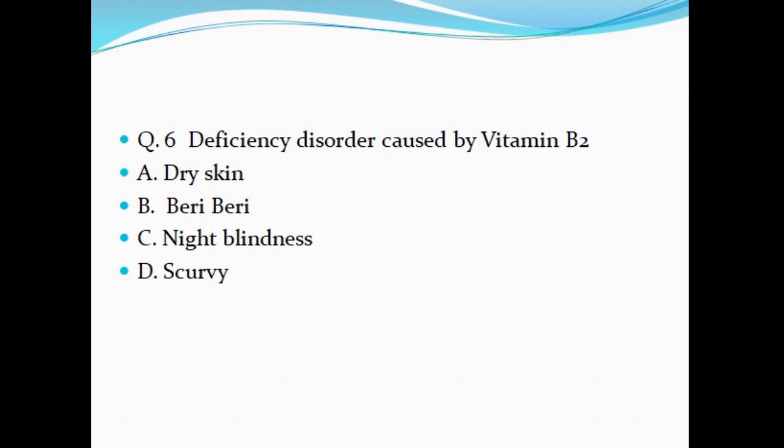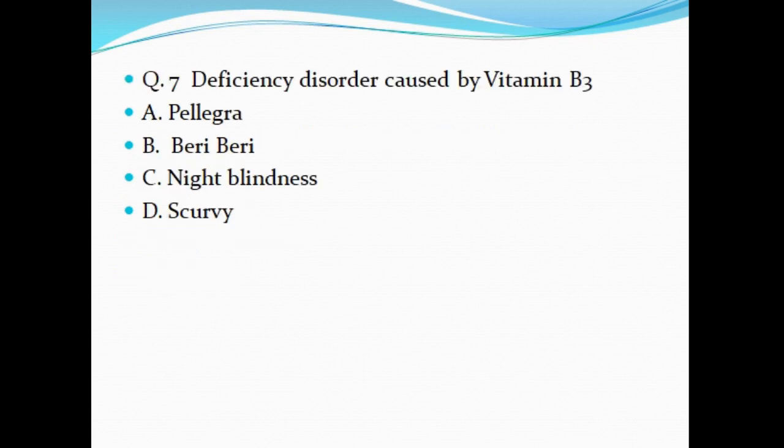Question 6: Deficiency disorder caused by Vitamin B2 — A. Dry skin, B. Beriberi, C. Night blindness, D. Scurvy. Question 7: Deficiency disorder caused by Vitamin B3 — A. Pellagra, B. Beriberi, C. Night blindness, D. Scurvy.